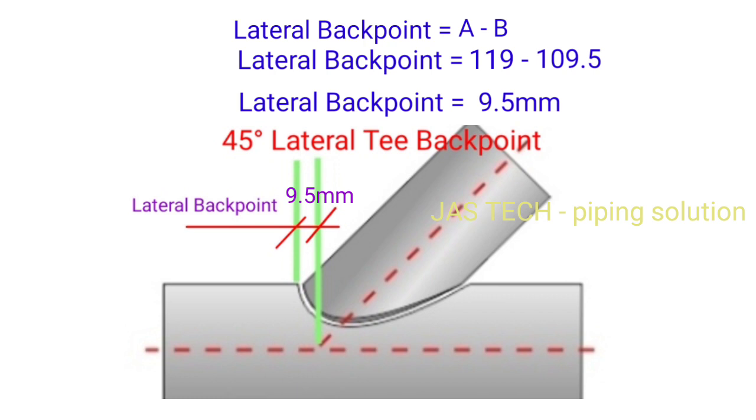First we mark the header center point for 45 degree lateral as per drawing. After that, from that point, we move 9.5mm for the lateral back point. From that point, branch layout marking we can start.